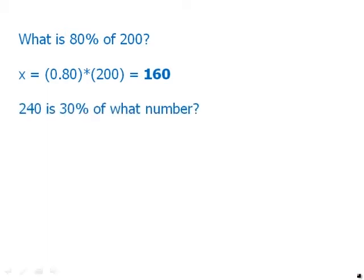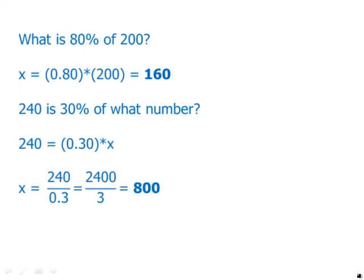Similarly, 240 is 30% of what number? 240 equals 0.3. 30% is 0.3 times, and then what number? x. So translating to math, then of course we divide, move the decimal place over, and divide out, we get 800.